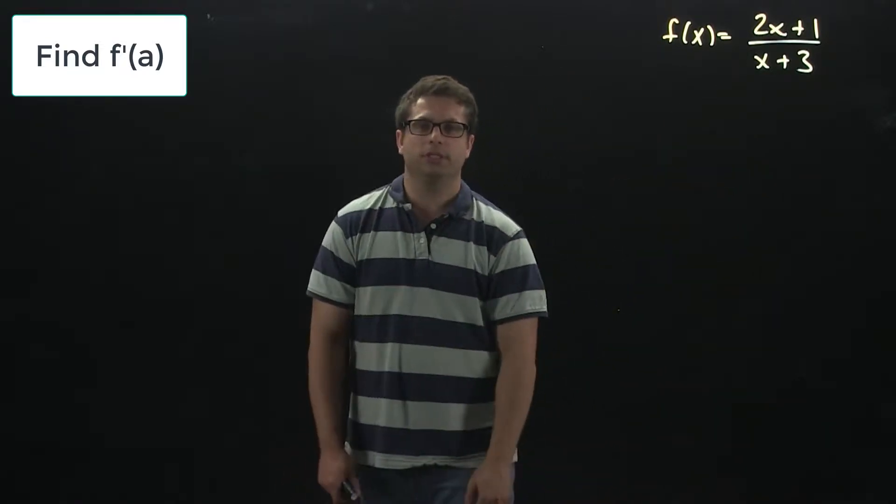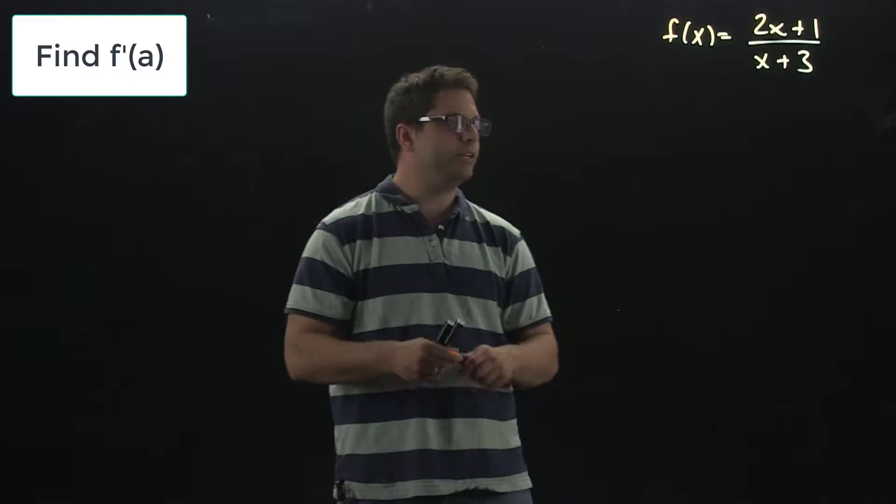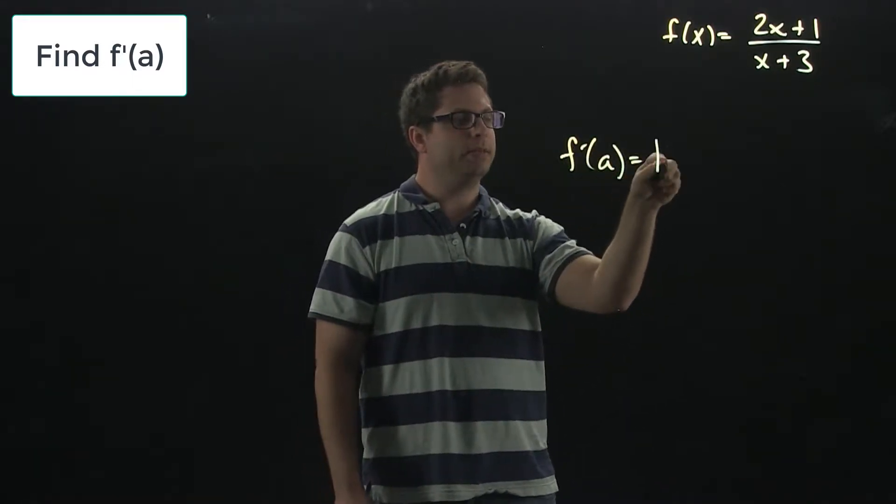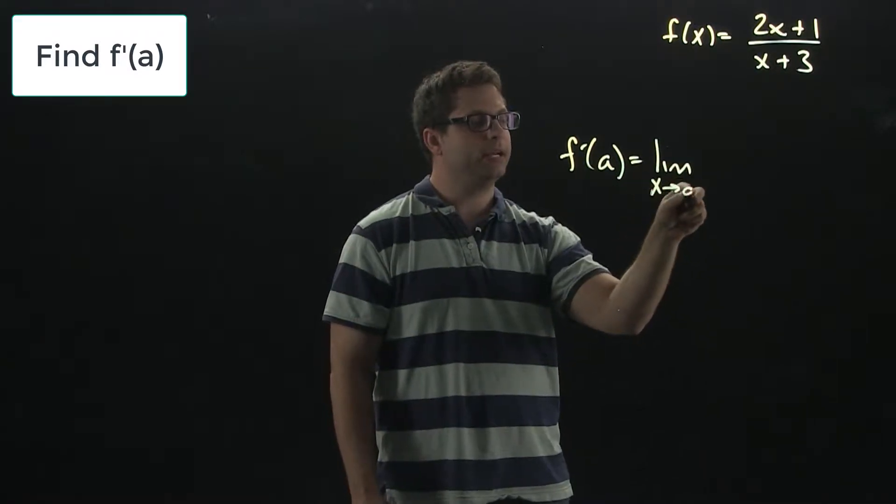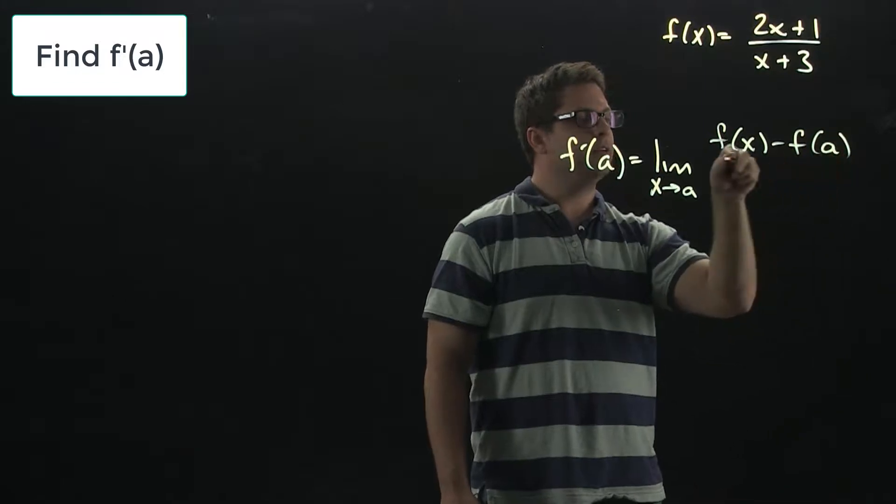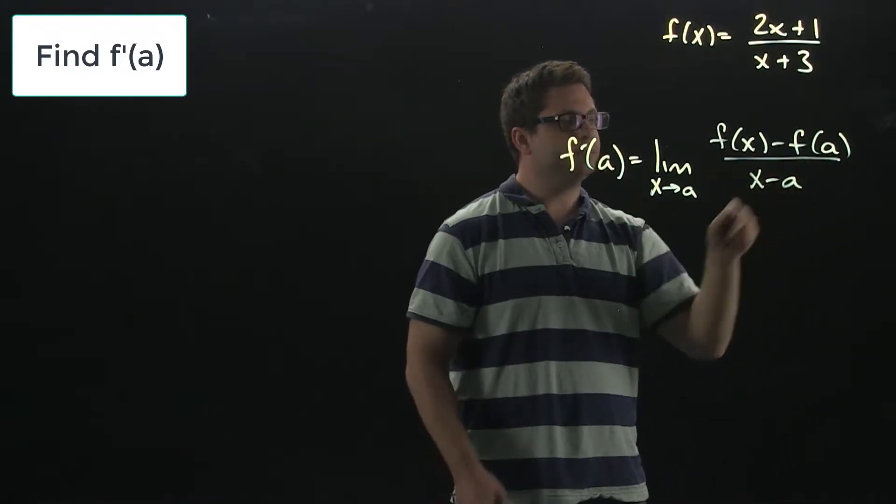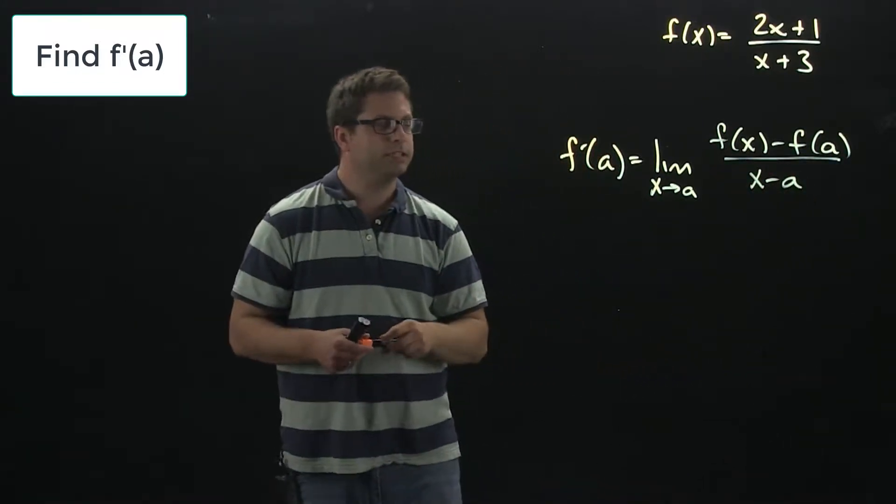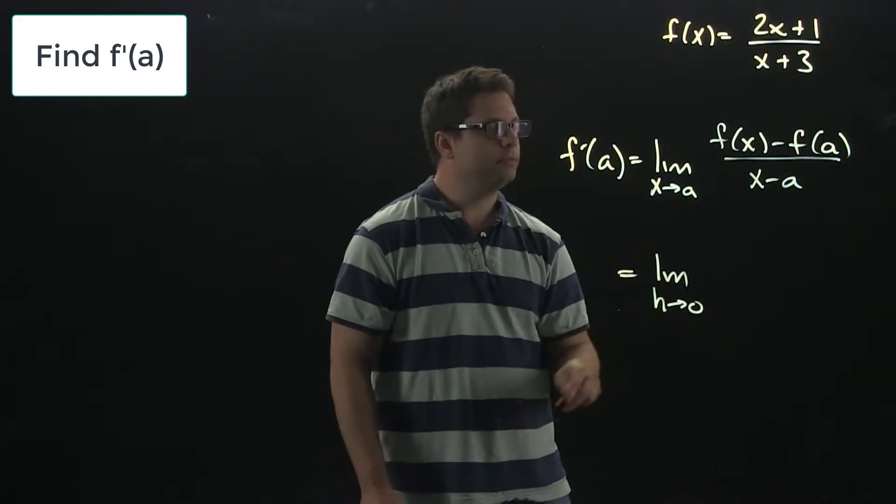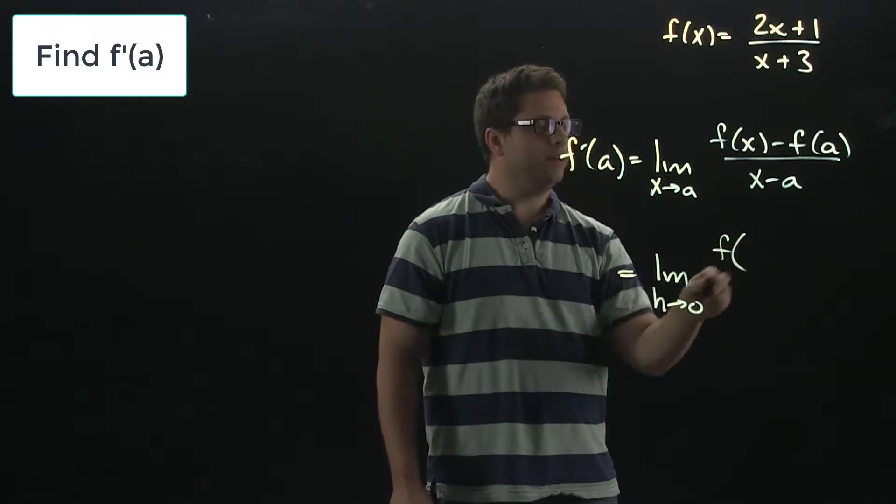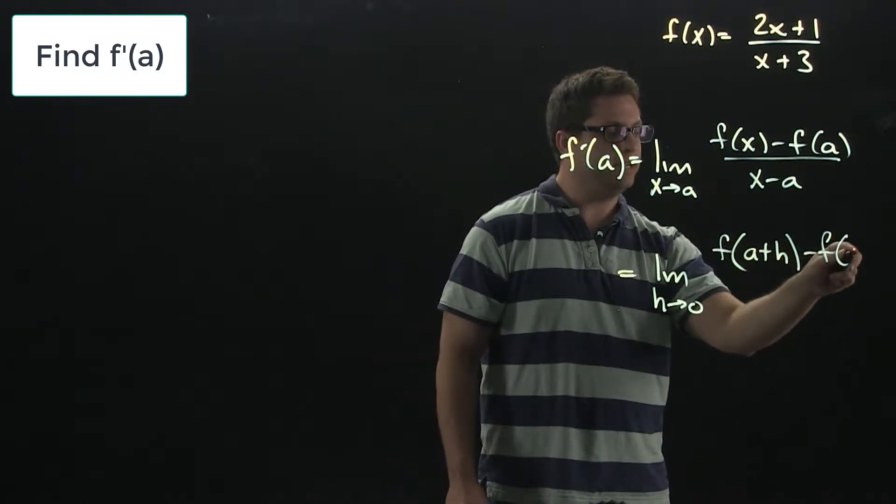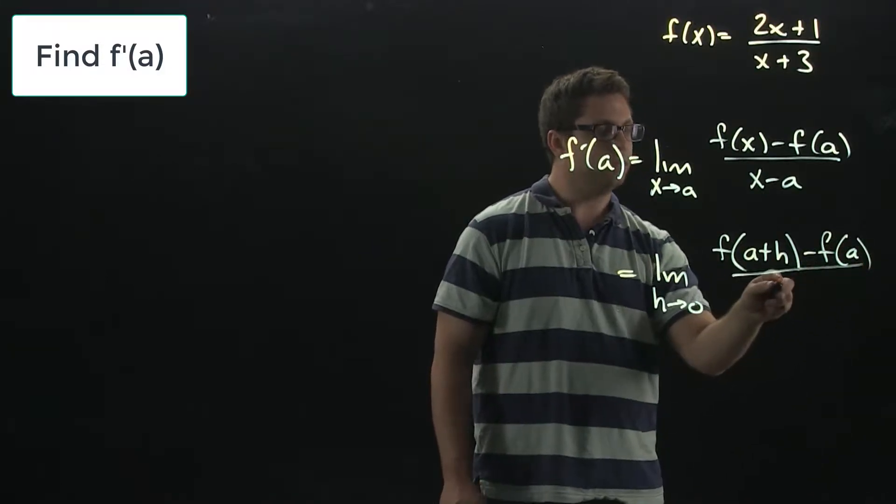So there are two versions of the derivative formula we can use. The first version is f prime of a is going to be the limit as x approaches a of f of x minus f of a all over x minus a. Now that's the first version. The second version is as h goes to 0 of f of a plus h minus f of a all over h.